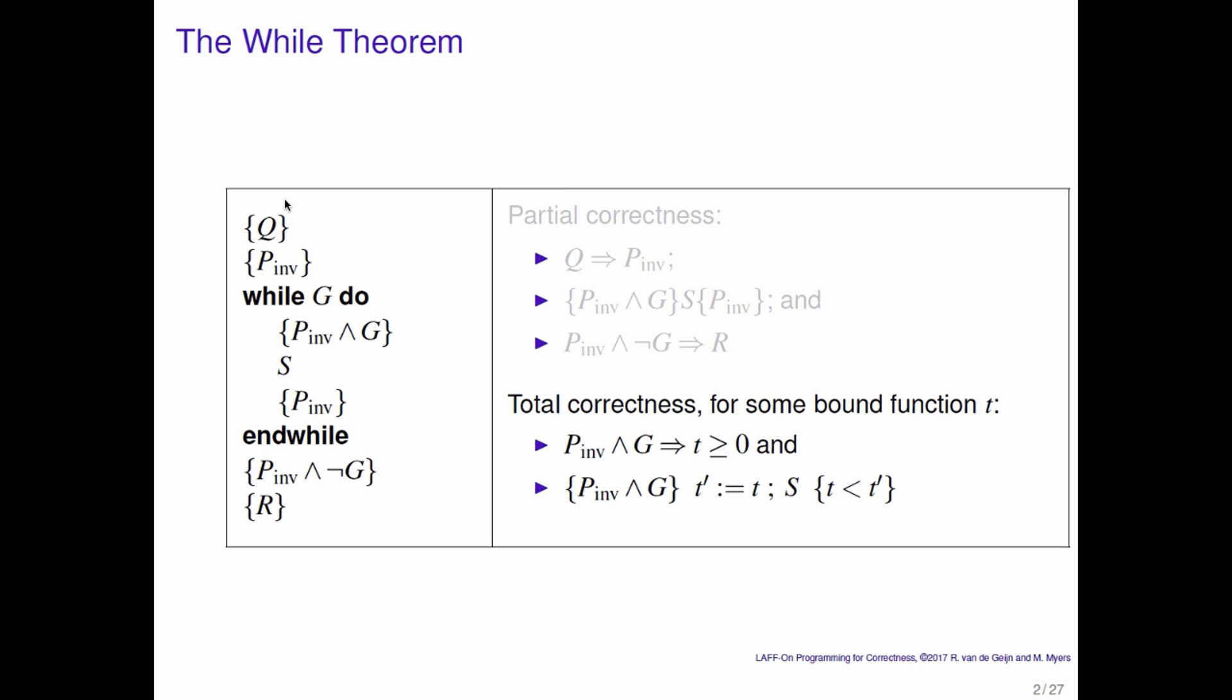How do you reason that a loop completes? Well usually you have some quantity, often the loop index, that is incremented or decremented every time through the loop. If it's incremented every time through the loop, usually there is a bound on how big it can get.